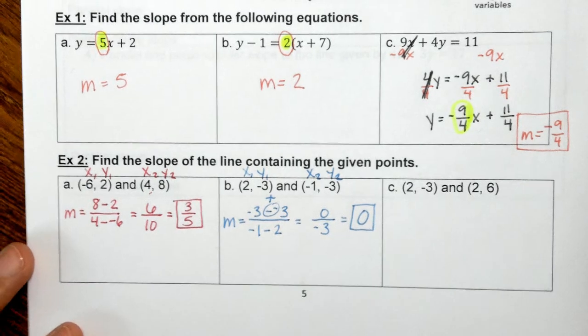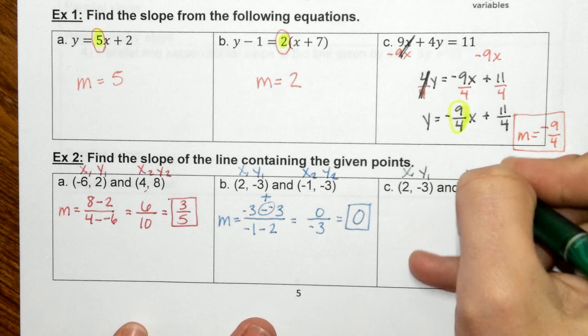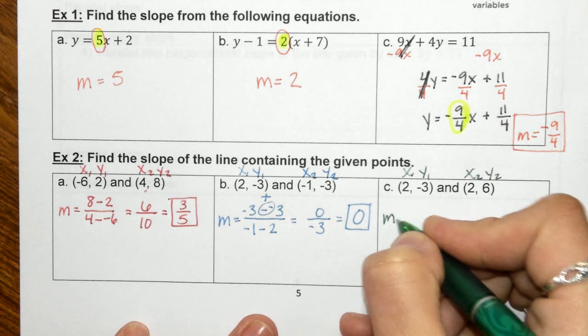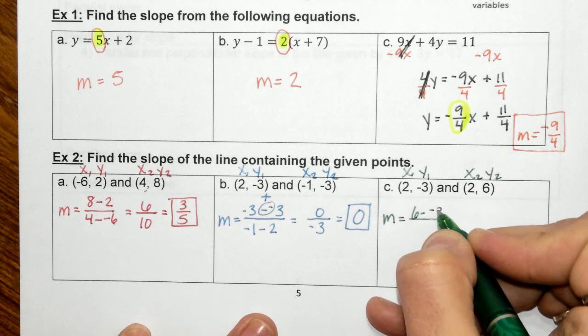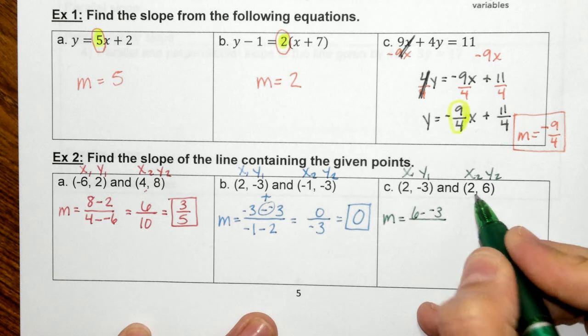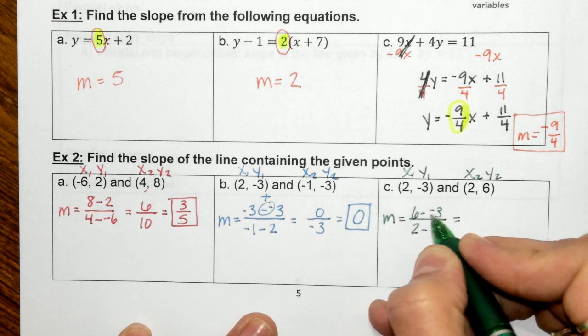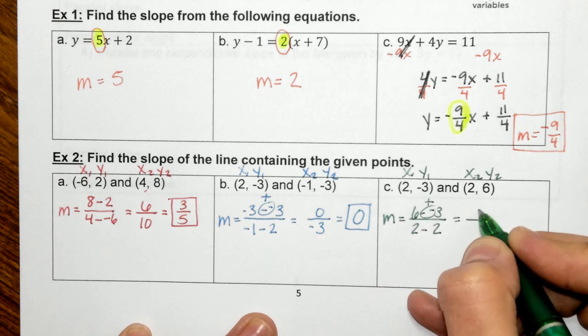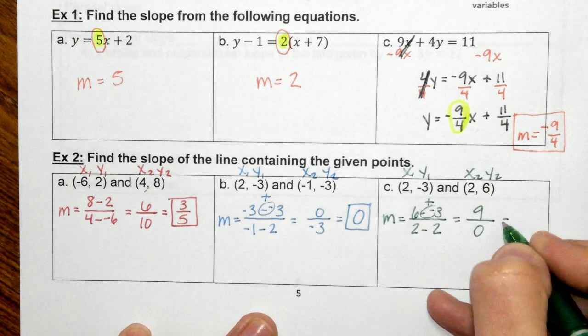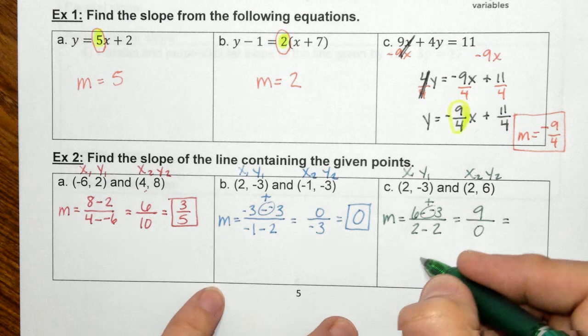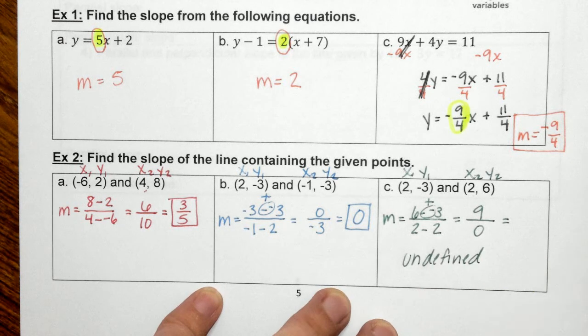This last one, we're going to do the same thing. We've got X1, Y1, X2, Y2. We set up our formula: Y2, which is 6, minus Y1, negative 3, and then X2, which is 2, minus X1, which is 2. We do 6 minus negative 3, that becomes 6 plus 3, we end up with 9 on top. 2 minus 2 is going to give you 0. When you put that in your calculator, it's going to tell you undef, which means undefined. So here we have an undefined slope.